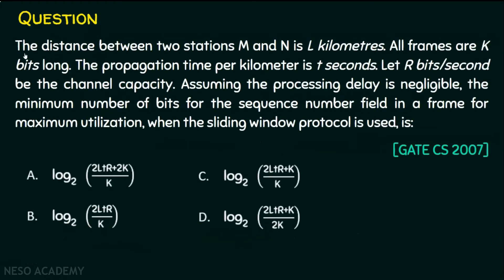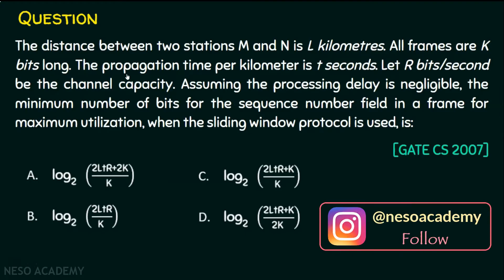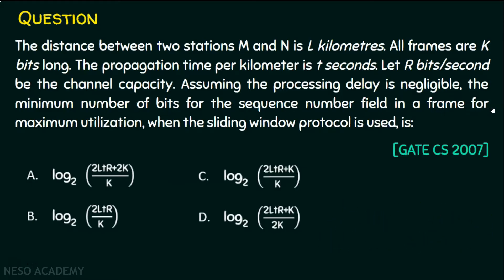The question is: the distance between two stations M and N is L kilometers. All frames are k bits long. The propagation time per kilometer is t seconds. Let r bits per second be the channel capacity. Assuming the processing delay is negligible, the minimum number of bits for the sequence number field in a frame for maximum utilization when the sliding window protocol is used is: